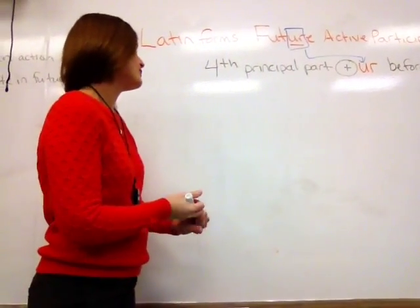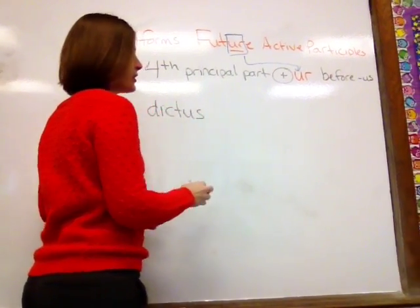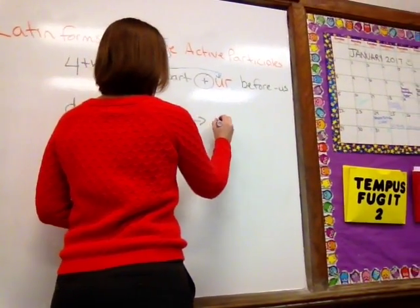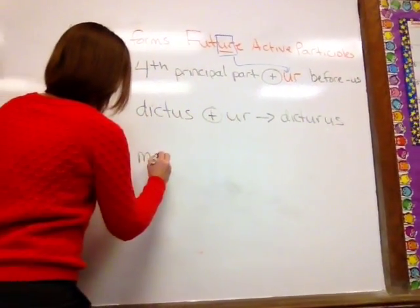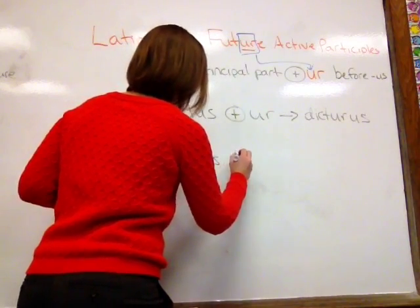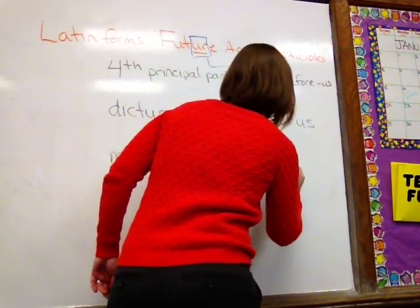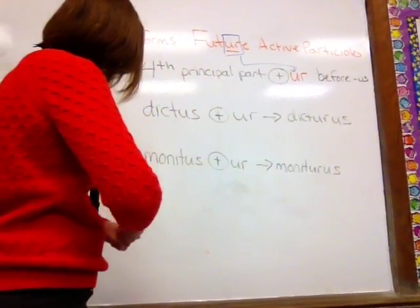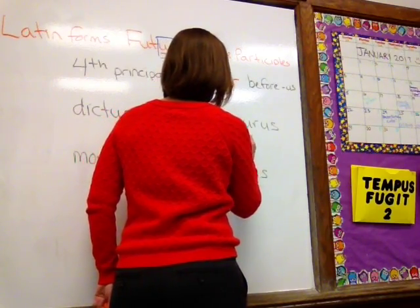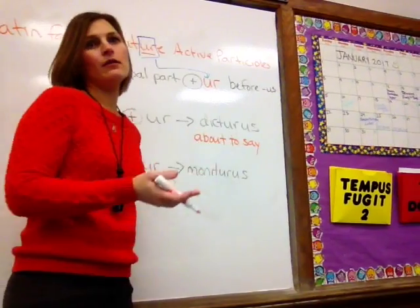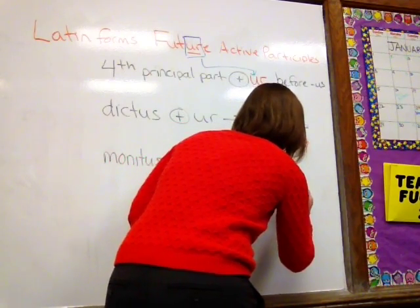Some samples for you. Dicturus — fourth principal part from dico, dicere — we add U-R and we get Dicturus. Moneturus — the fourth principal part from moneo, monere — add U-R and you get Moneturus. Dicturus would roughly translate to 'about to say,' 'about to tell,' 'about to talk.' Moneturus — about to warn.